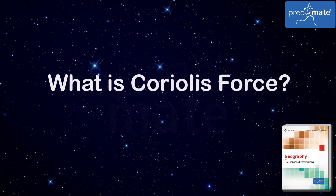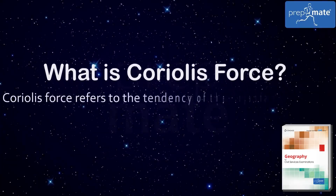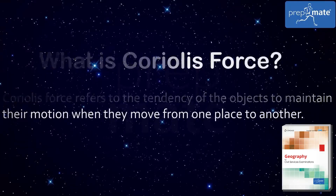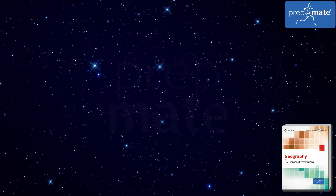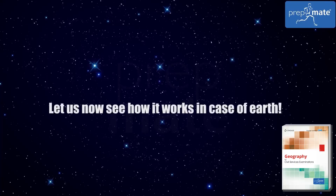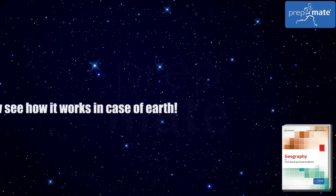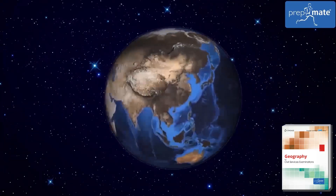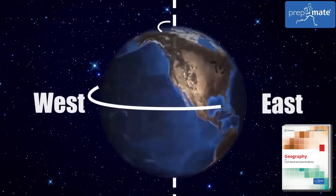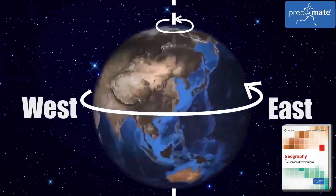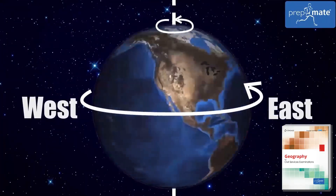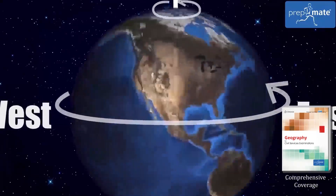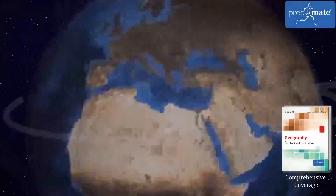What is Coriolis force? Coriolis force refers to the tendency of objects to maintain their motion when they move from one place to another. Let us now see how it works in case of Earth. The Earth rotates faster at the equator than at the poles because the Earth is wider at the equator. A point on the equator travels faster than a point on the pole.